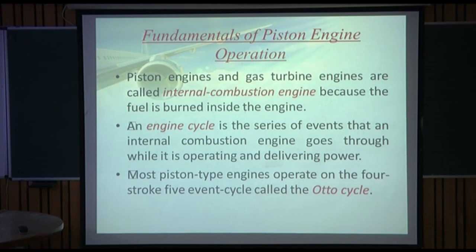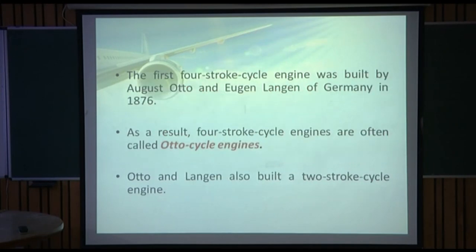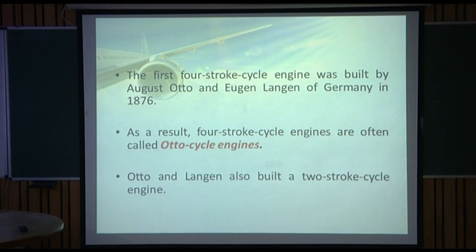Most piston type engines operate on the 4-stroke 5-event cycle called the Otto cycle. This first 4-stroke cycle engine was built by August Otto and Langen of Germany in 1876. As a result, 4-stroke cycle engines are often called Otto cycle engines. Otto and Langen also built a 2-stroke cycle engine.